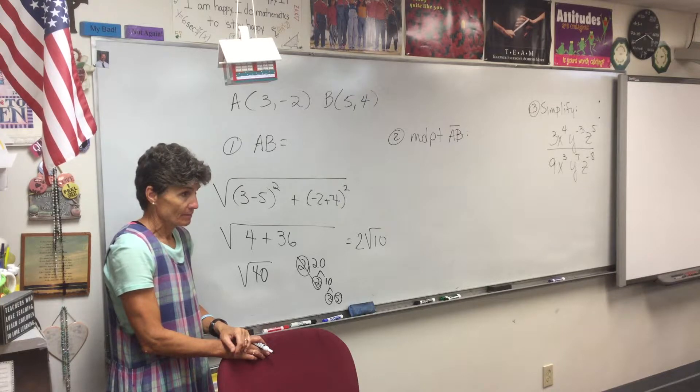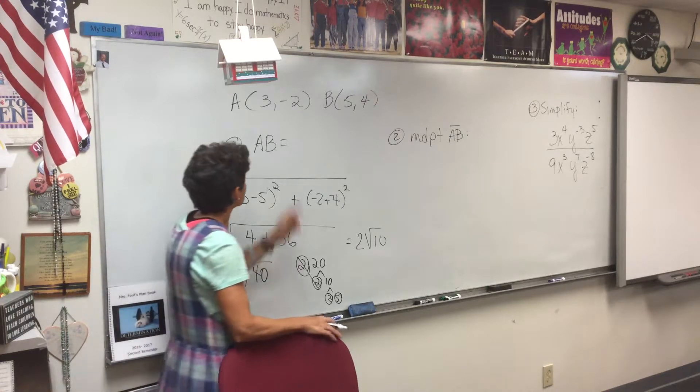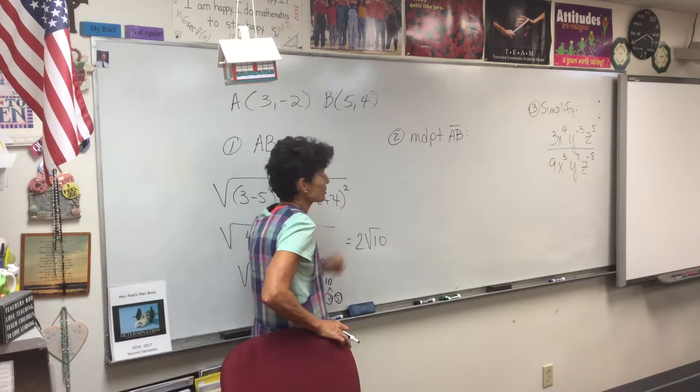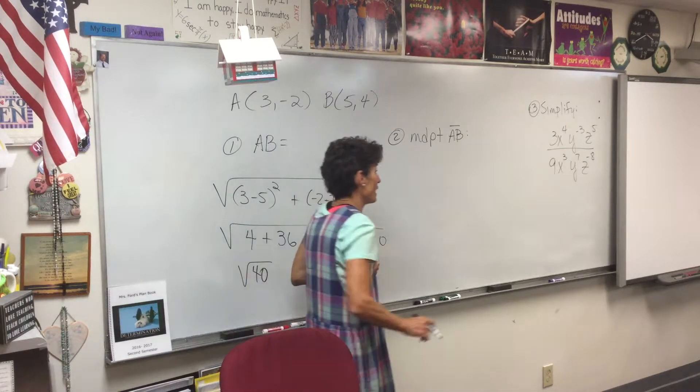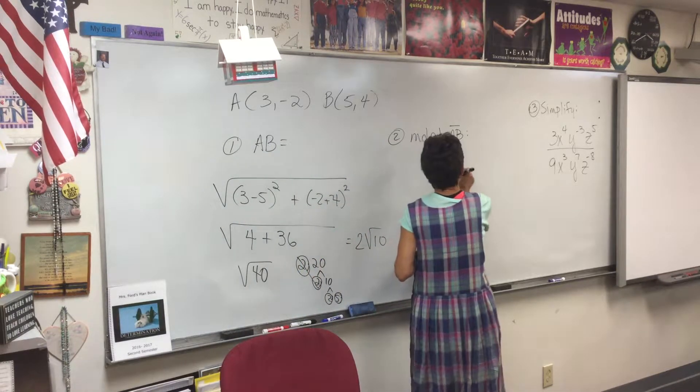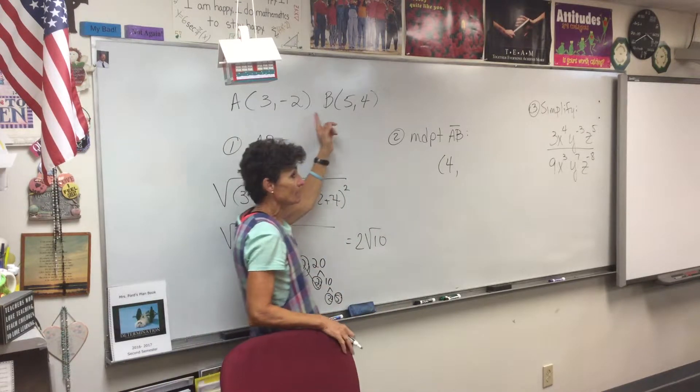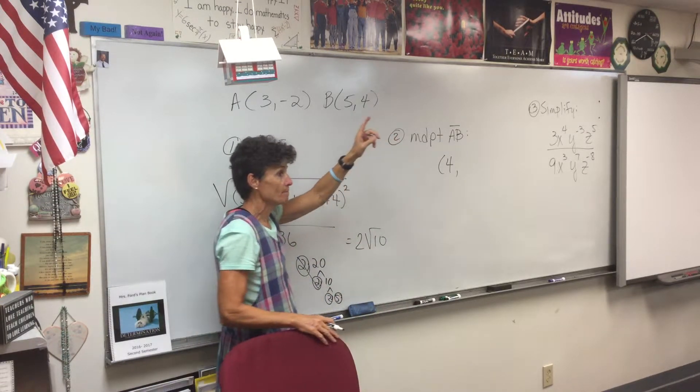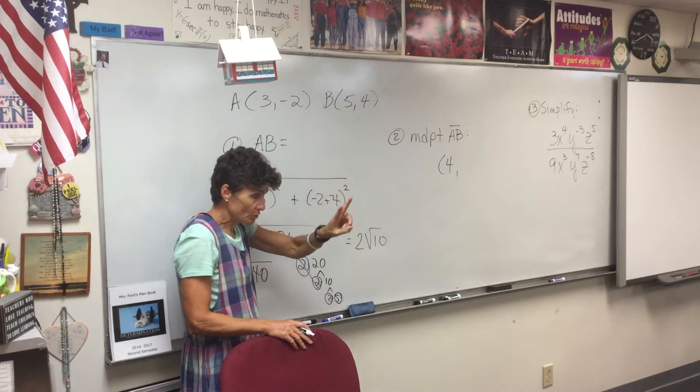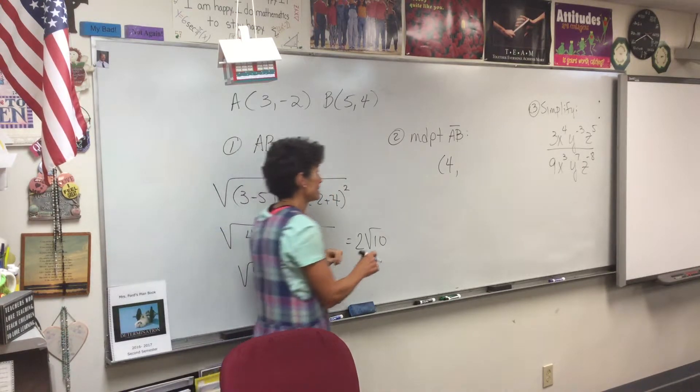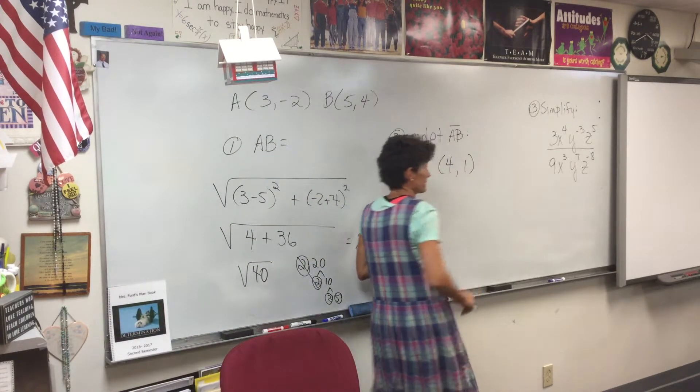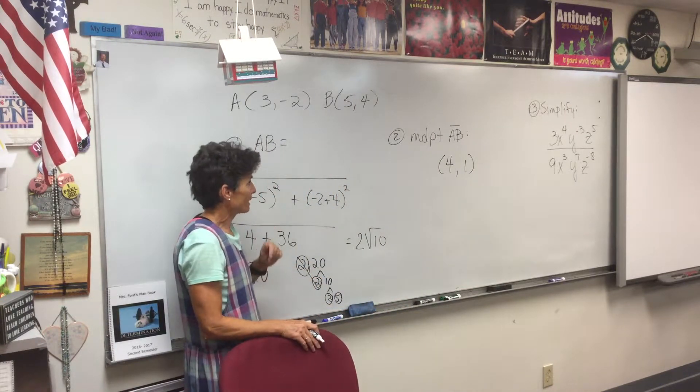So when I average my x's, 3 plus 5 is 8, divided by 2 is 4. And then the same thing with my y's: negative 2 plus 4 is 2, divided by 2 is 1. How many got that one entirely right?